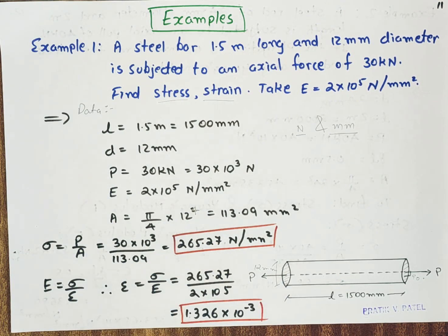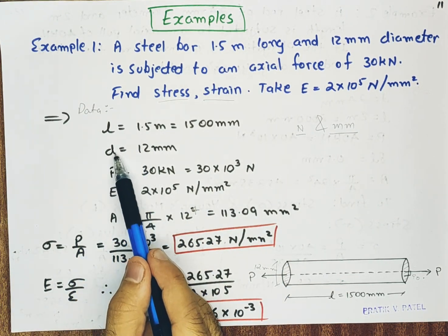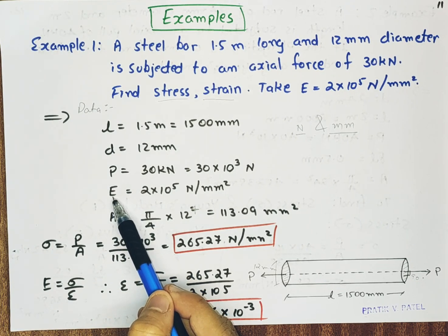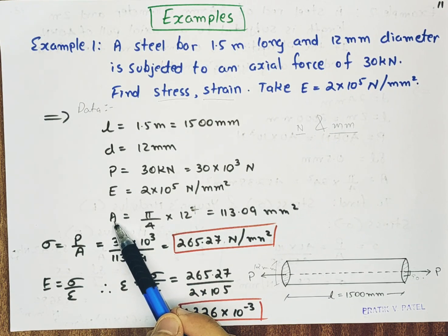So I have written all the data. That is length, diameter, force. P means force. E means modulus of elasticity. A is cross sectional area.